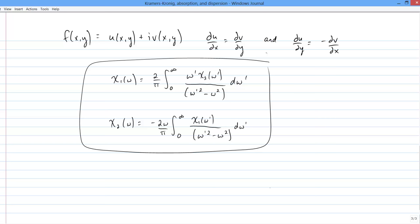These are the Kramers-Kronig relations. And physically, what they do is express the real part of the susceptibility in terms of the imaginary part, and vice versa.